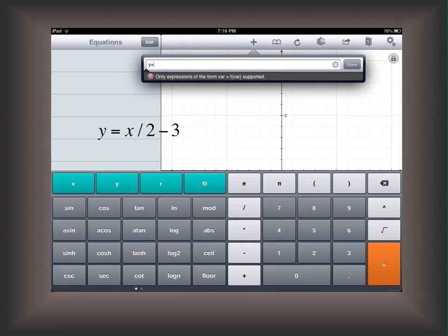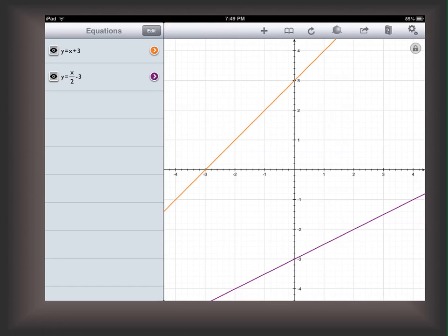And after that, I can put my second equation in: y equals x divided by 2 minus 3. And that will appear in that input window as well. When I'm done, what I get is I can see that I have my two equations on the left, and the first one is graphed in orange and the second one is graphed in purple.